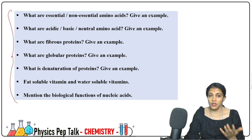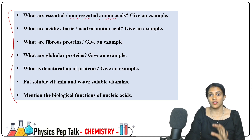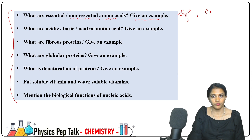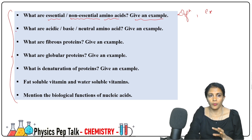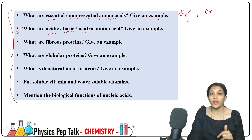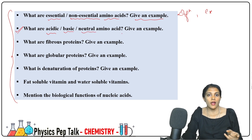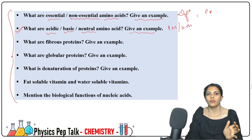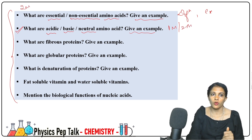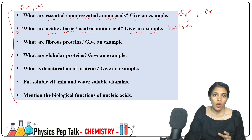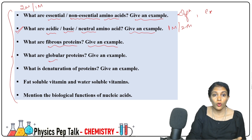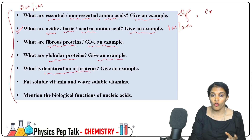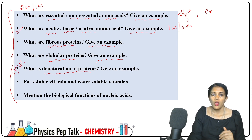What are non-essential amino acids? Give an example — complete question for 1 mark definition and 1 mark example. Next: essential and non-essential amino acids. Next question: what are acidic amino acids, basic amino acids, and neutral amino acids? Also very important: what is denaturation? Give an example — this is very very important.